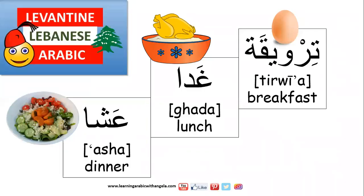What are the three main meals called? Terwi'a is breakfast. We pronounce the qaf as a glottal stop in Lebanese, so terwi'a. Ghada is lunch. And dinner is asha. Terwi'a. Ghada. Asha.